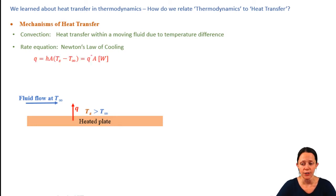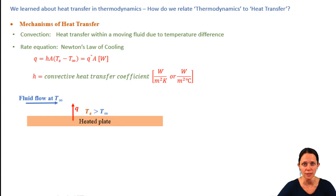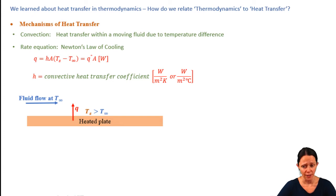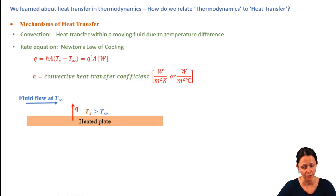In Newton's law of cooling, there's a variable h — the convective heat transfer coefficient — with units of watts per meter squared Kelvin or watts per meter squared degree Celsius. Unlike thermal conductivity, the convective heat transfer coefficient h is not a material property. It depends on many things including the thermal conductivity of the fluid, the flow characteristics of that fluid, and the geometry of whatever it's flowing over. Determining h is a difficult task, so for now it will just be given to you.